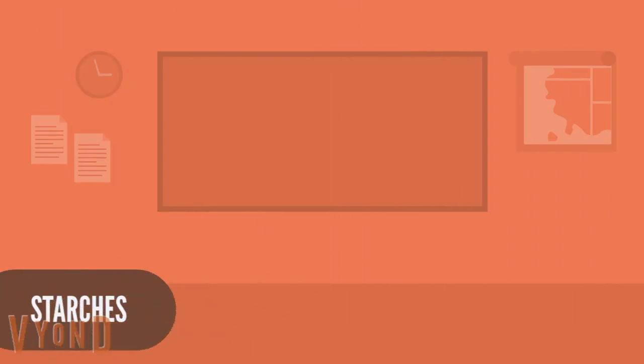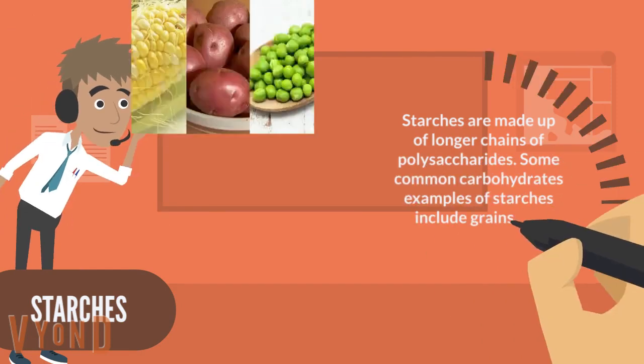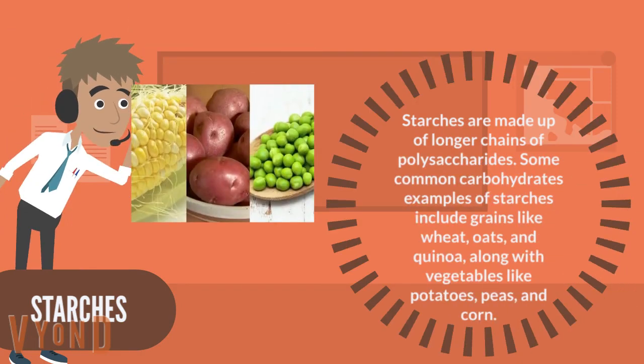Starches are made up of longer chains of polysaccharides. Some common examples of starches include grains like wheat, oats, and quinoa, along with vegetables like potatoes, peas, and corn.